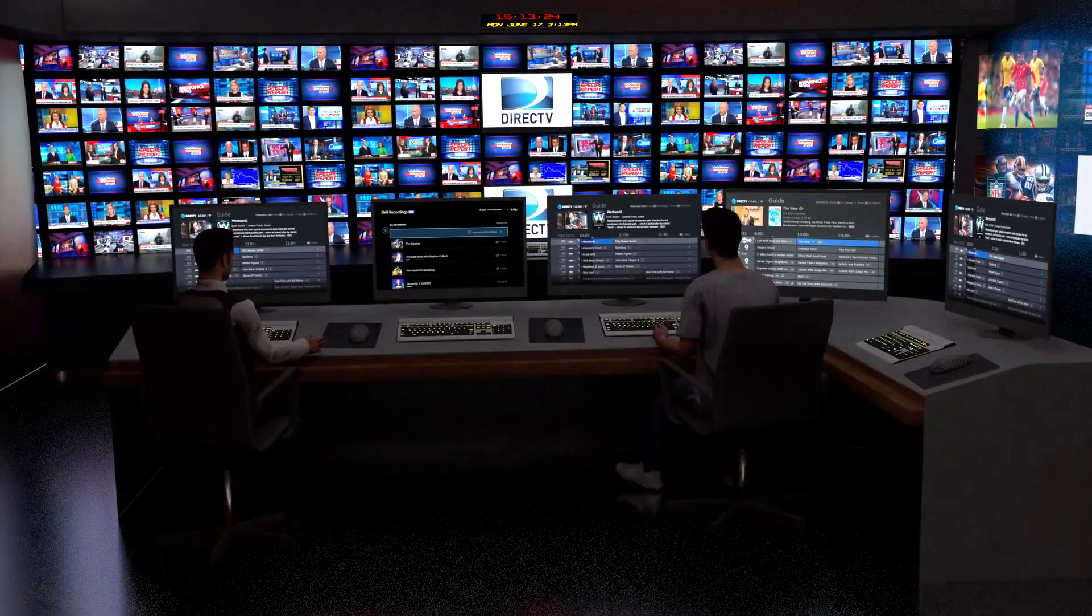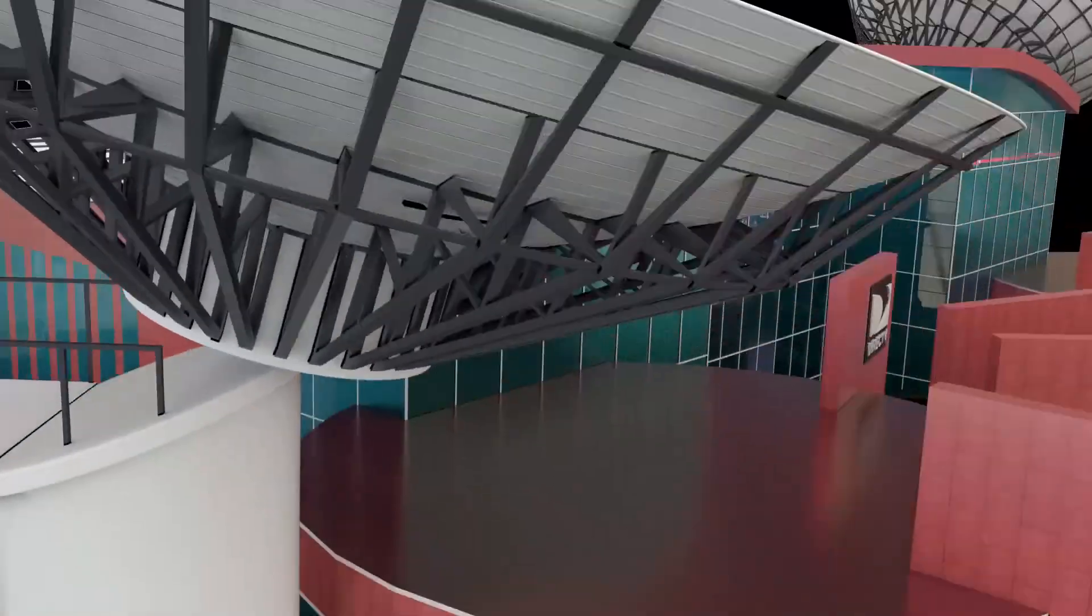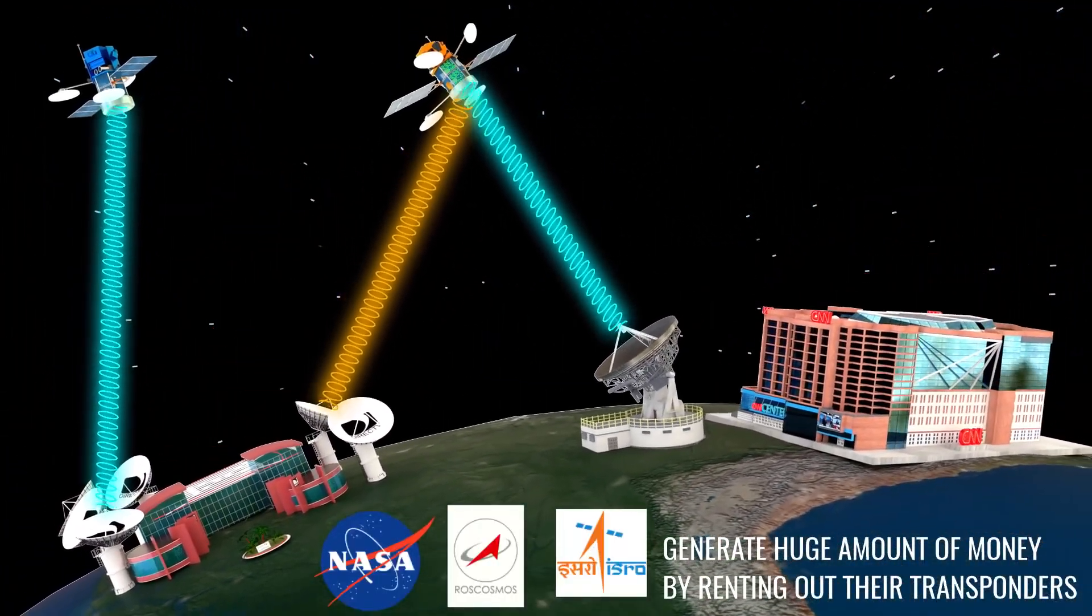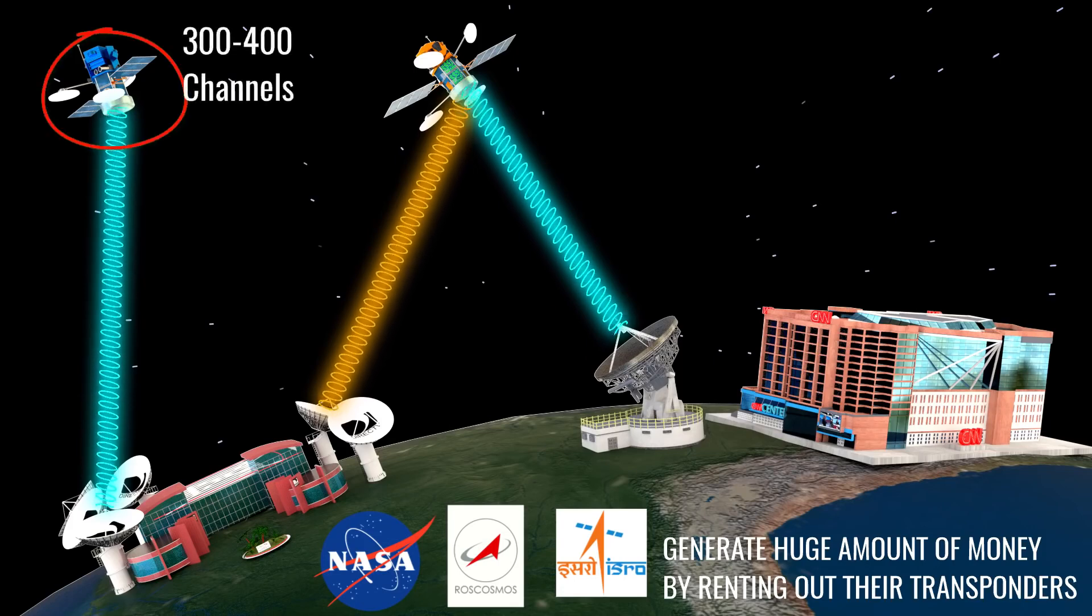After that, the DBS provider beams the signal to their rented transponder in a satellite. A DBS provider rents many transponders to handle the huge amount of data they have to transmit. This way, around 300 to 400 channels will be available on a single DBS provider satellite.